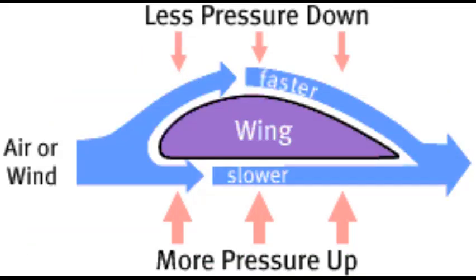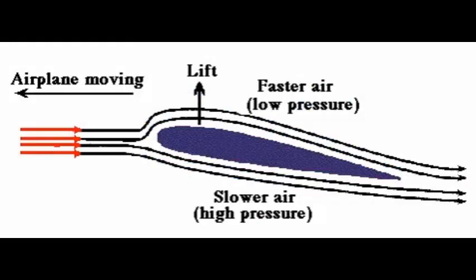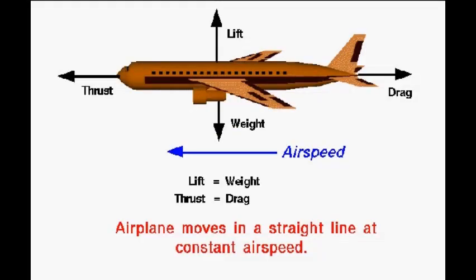This creates more air pressure below the wing than above. So the net vertical force is upwards, and the aeroplane engine moves the wings forward.